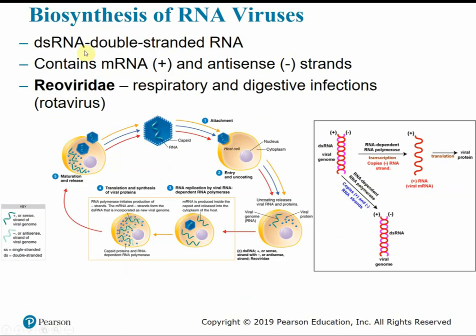Double-stranded RNA viruses contain both an mRNA positive-sense strand and an antisense negative strand. Because they have both copies already, they can undergo translation and replication immediately without the extra step of making copies from an original strand. One strand is used in translation of viral protein, and the other is used to make copies of the viral genome. An example is reoviridae, including rotavirus, which causes common respiratory or digestive infections.